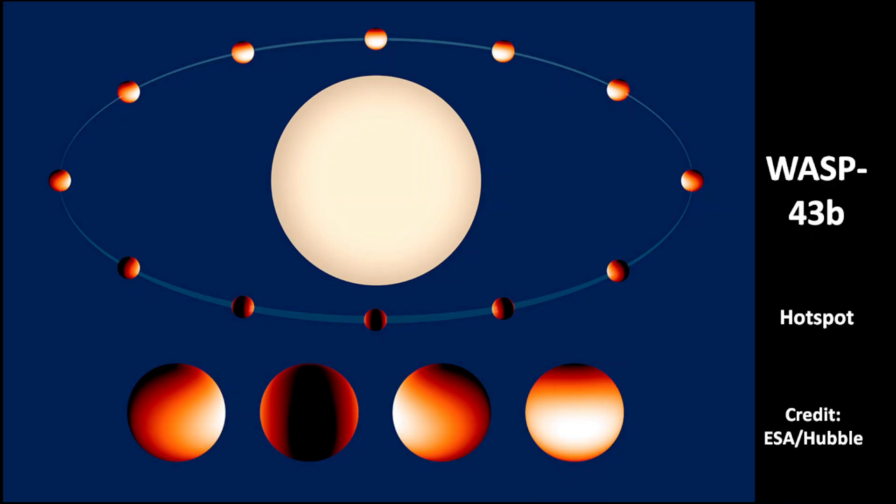The hotspot of WASP-43b is not at the point with the highest stellar radiation but is shifted to the east by the strong winds. The maximum wind speed is 2.0 to 2.5 km per second.